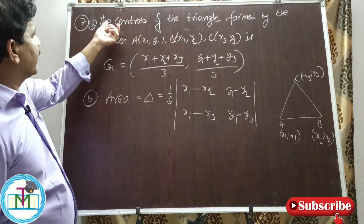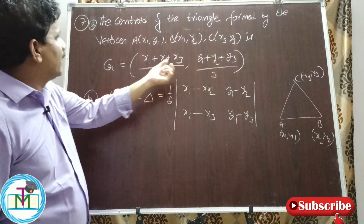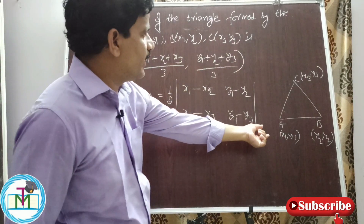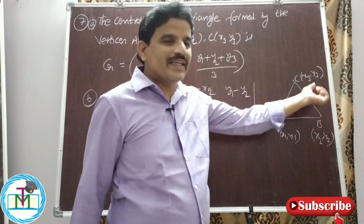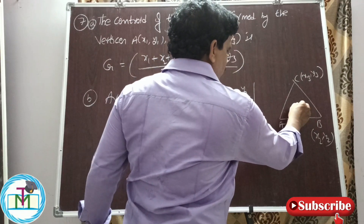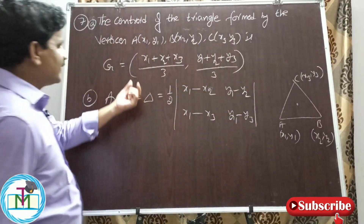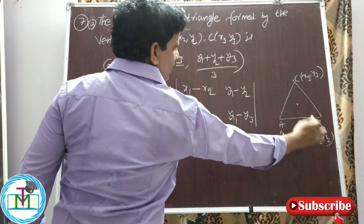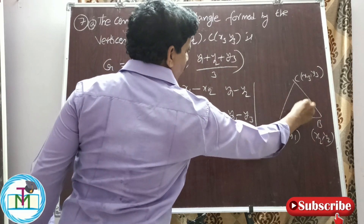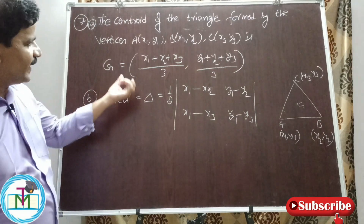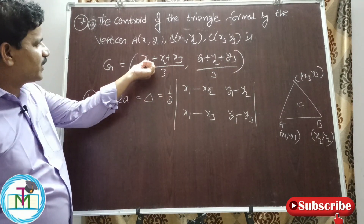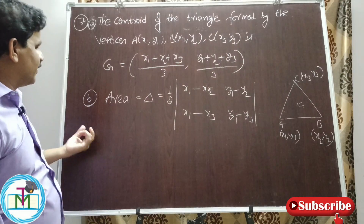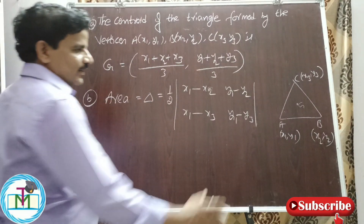Point number seven: the centroid of the triangle formed by vertices A(x1, y1), B(x2, y2), and C(x3, y3). The centroid G is given by ((x1 + x2 + x3)/3, (y1 + y2 + y3)/3). So the centroid formula is simply the average of the x-coordinates and the average of the y-coordinates of the three vertices.